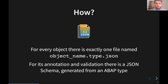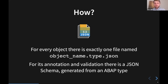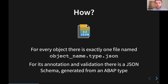ABAP File Formats is based around JSON. Different object types have different requirements - some have translations, others have text elements, simple transformations have XML data - so there might be different files included in one file format. But what ABAP File Formats specifies and guarantees is that there's exactly one file named after the object: object-name dot object-type dot json. No matter which object type you're dealing with, this is the file you always get. Since it's JSON, we also provide a JSON schema for annotation and validation.